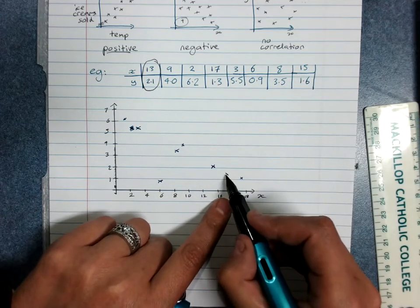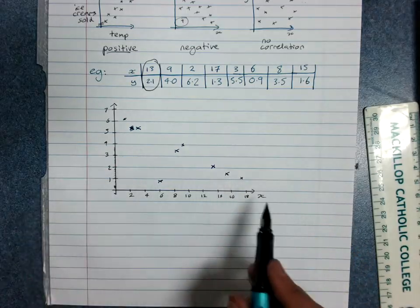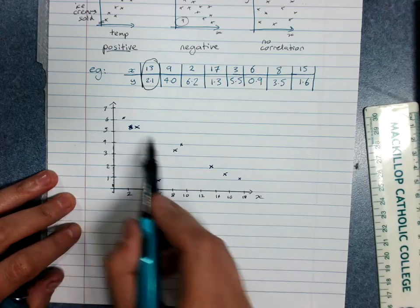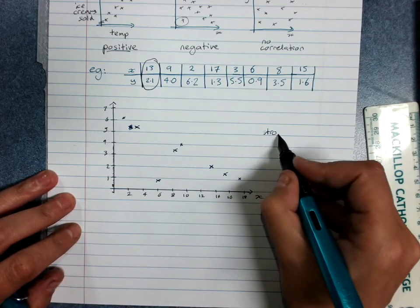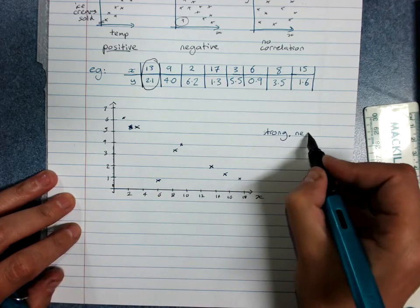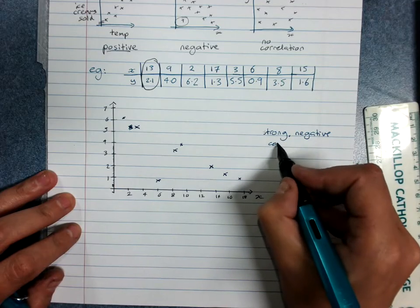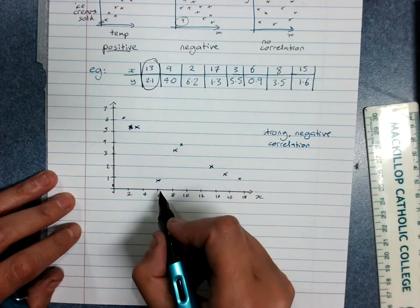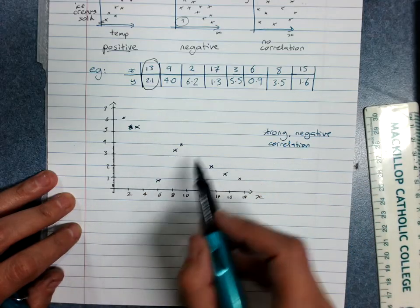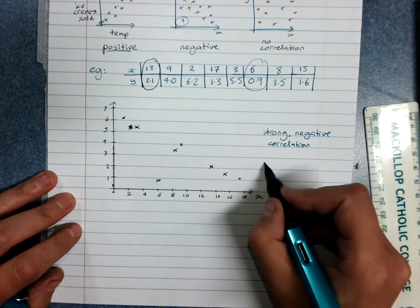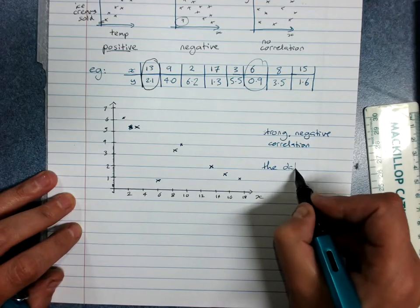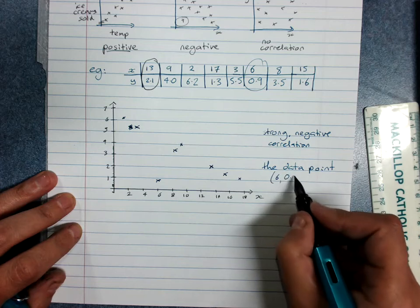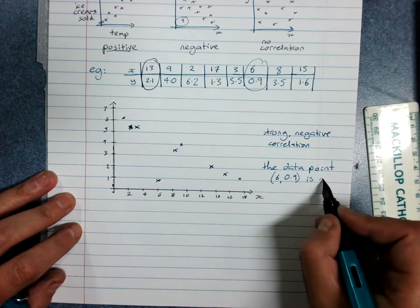15 and 1.6. So quite clearly here, we have a strong negative correlation. And the point, this was at the data point 6, 0.9 is an outlier.